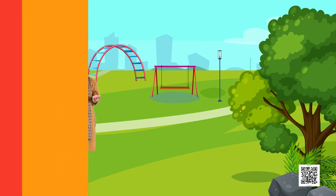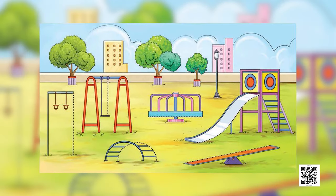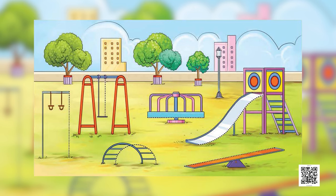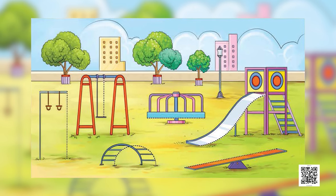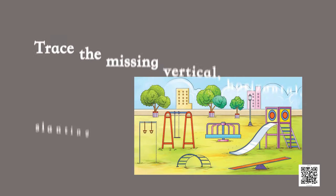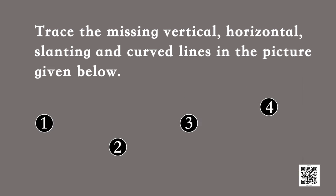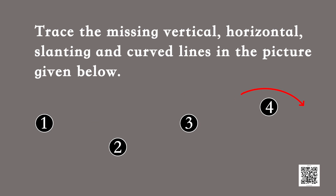See this beautiful image — it's a park with some joyrides. Did you notice something? Some of the lines are missing. Why don't you help me trace those missing lines? We can trace the vertical line, horizontal line, slanting line, and curved line. Let's see!